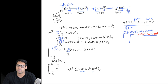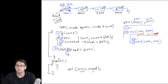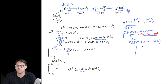When we call rev(1000, 2000), 1000 is stored in previous and 2000 is stored in current. Line 1 is true because 2000 is not null, so we are going to execute line 2. We again encounter the recursive statement and it is going to call rev(2000, 3000), because we are going to call current.link. And when we call rev(2000, 3000), previous is storing 2000 and current is storing 3000.